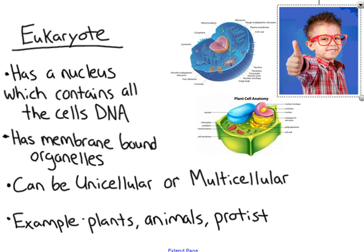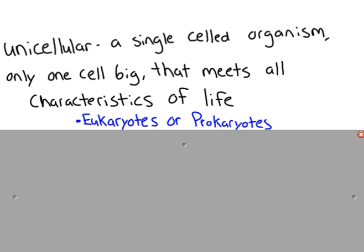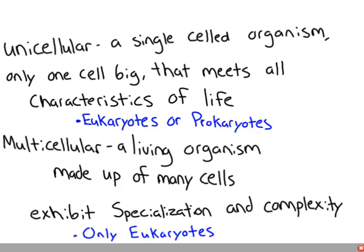Two terms I want to define: unicellular organisms are single-celled organisms — only one cell — and that one cell meets all the characteristics of life. These can be either eukaryotic or prokaryotic, but all prokaryotes are unicellular, while eukaryotes can be unicellular or multicellular.